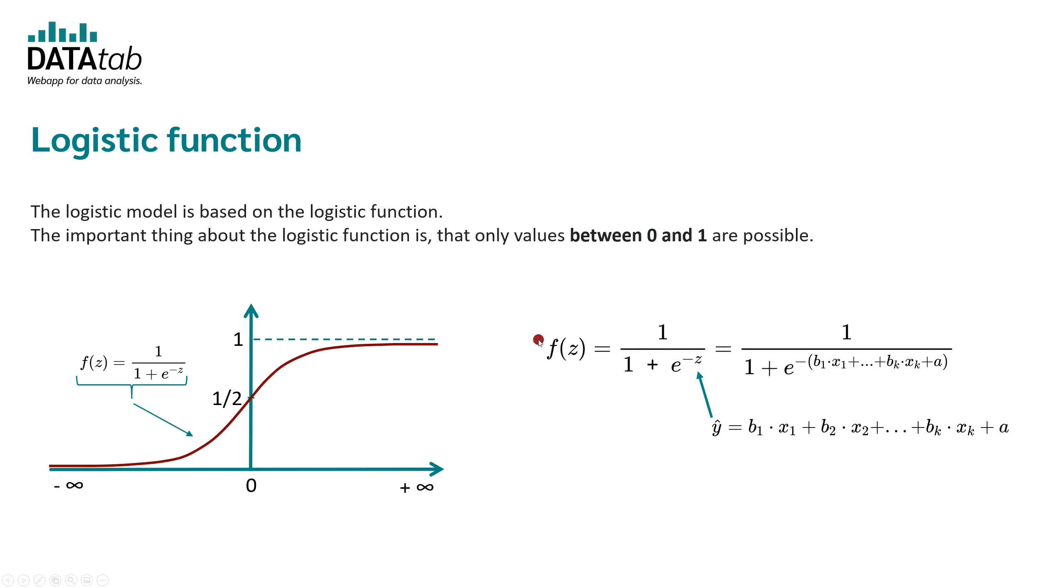This is the equation for the logistic function. So the logistic function is 1 divided by 1 plus e to the power of minus z. And for z we insert the equation of the linear regression. So this is the final equation for the logistic regression. Now the task is to determine the coefficients b1 up to bk and a. Of course, this is done by the statistical software. You don't have to do it yourself.